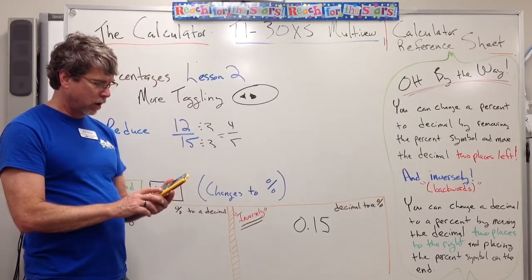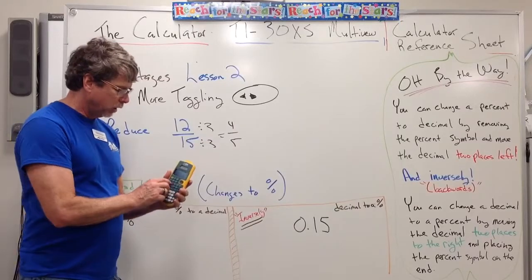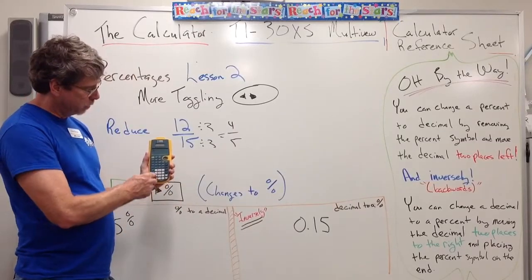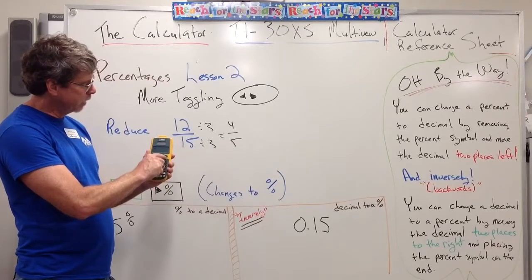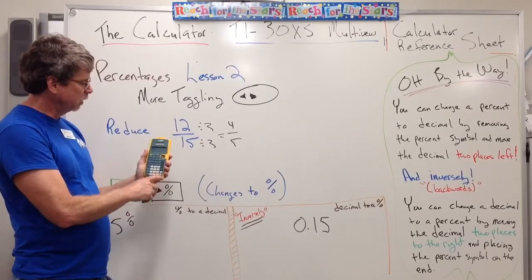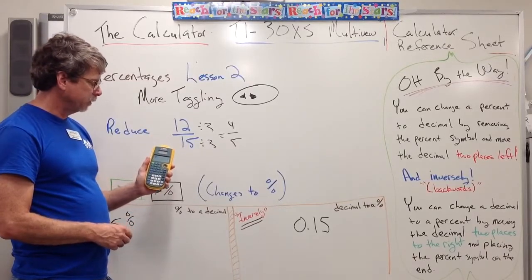So turn the calculator on, clear it off. Hit the N over D button. That gives you my format. Put the 12 in the numerator, down arrow, 15, right arrow to get out from underneath there. Hit enter, and that will give me my 4-5ths.